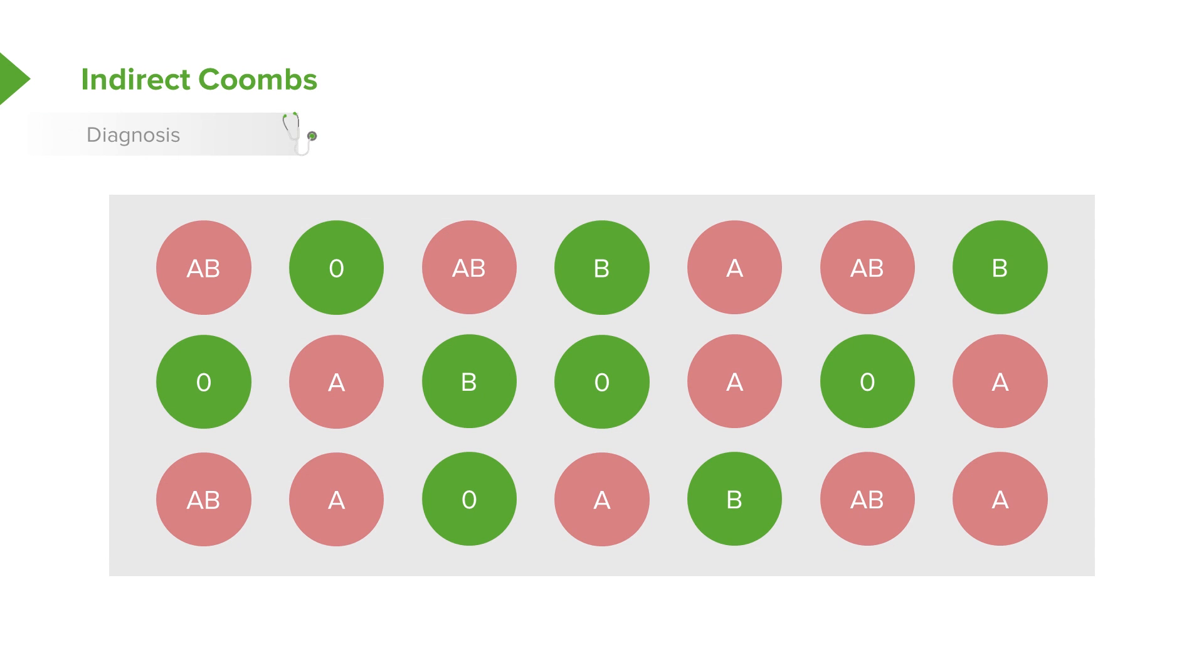When I look at this array and I see this pattern, I can say, yup, this patient has anti-A antibodies in their serum. I've essentially figured out what this person is attacking.